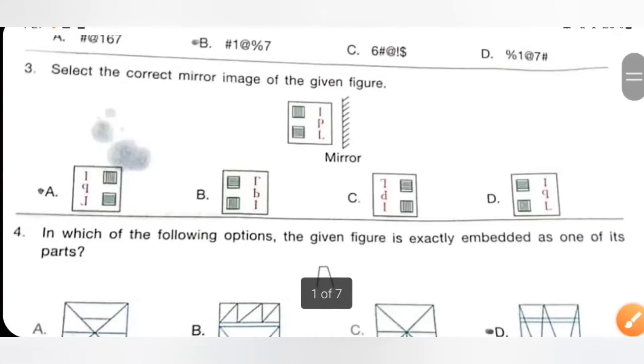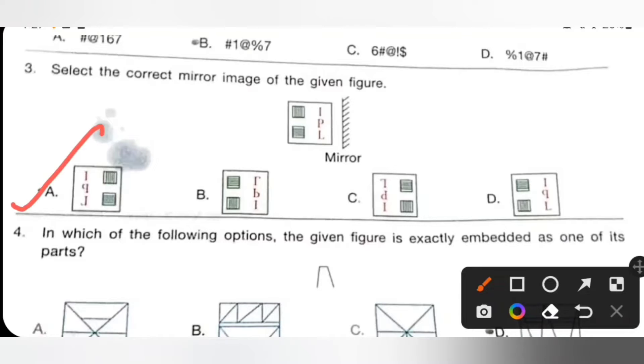Third one: Select the correct mirror image of the given figure. So please check the given option. Option A is the correct answer, option A is the correct mirror image.